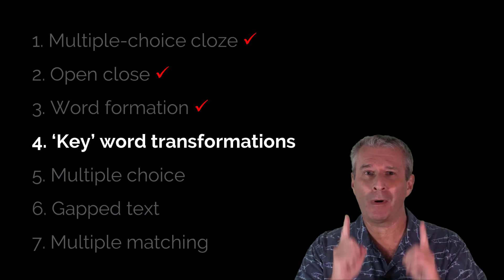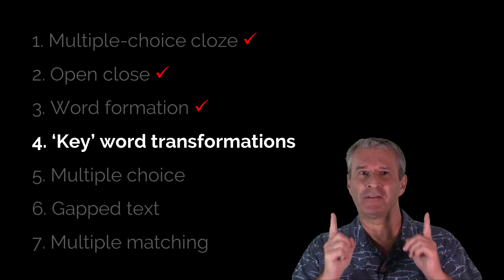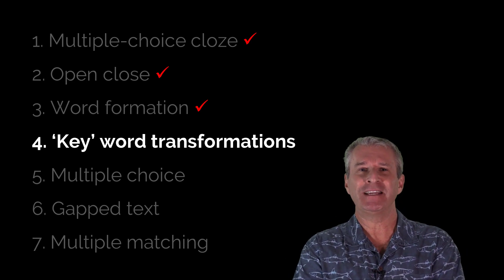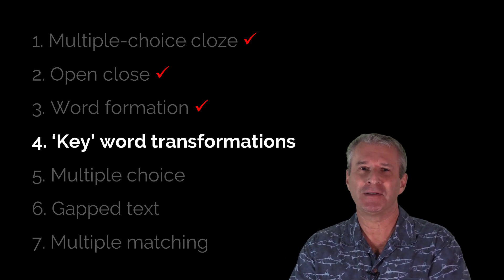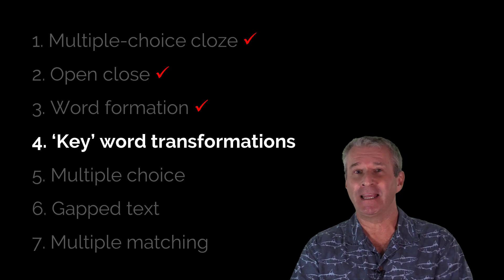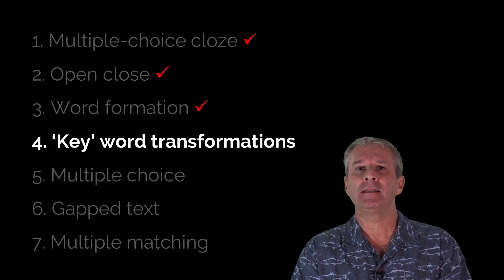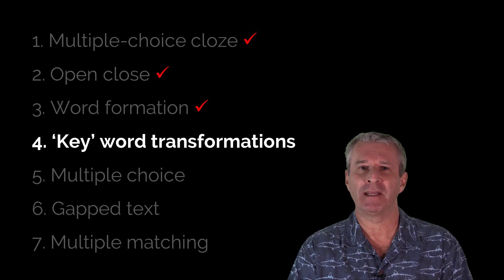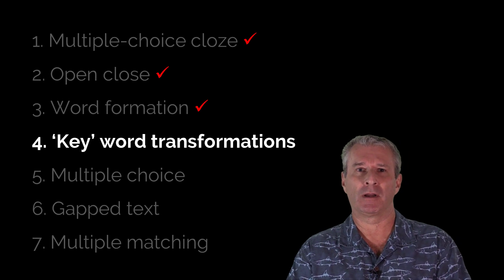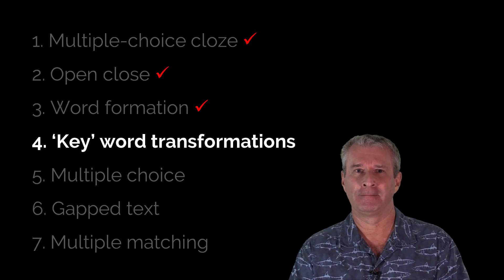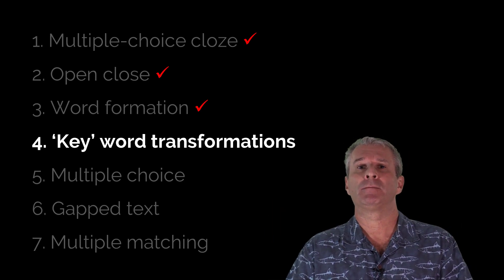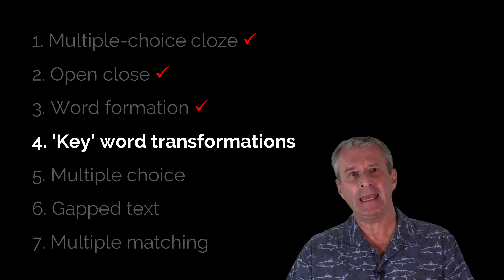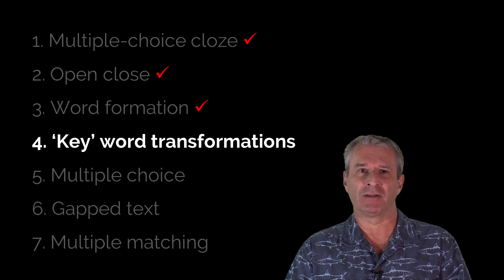Just to remind you, there are seven parts altogether in the Reading and Use of English paper in total, and you have one hour and 15 minutes to complete it. So moving on to part four: the key word transformations.